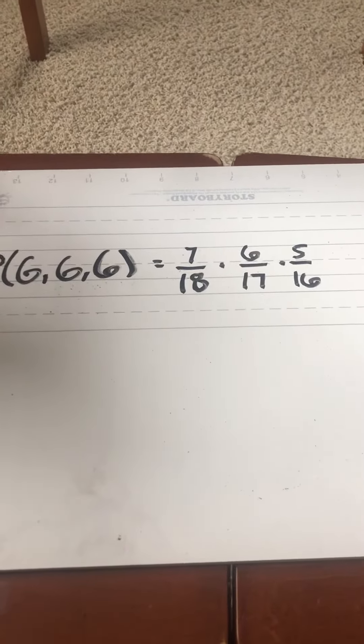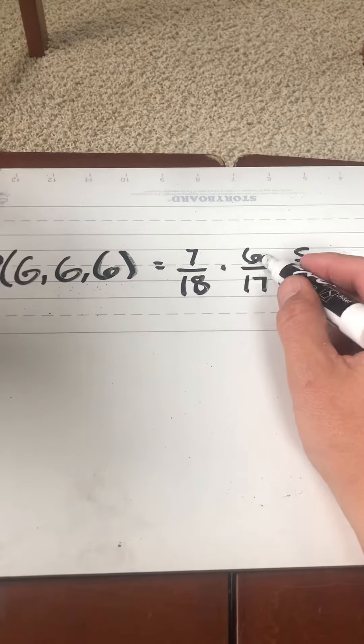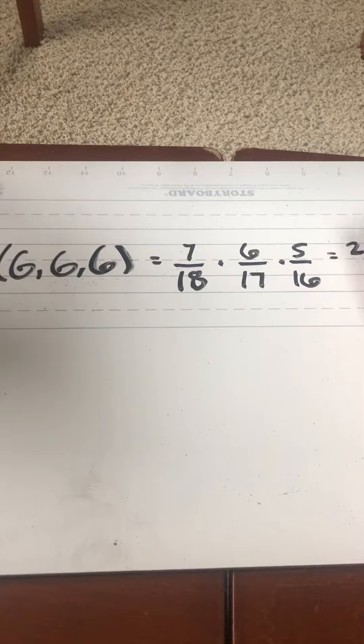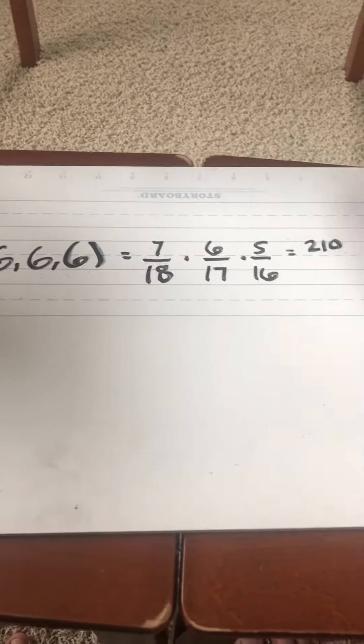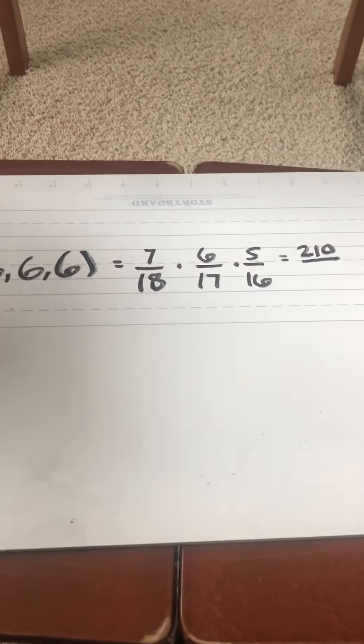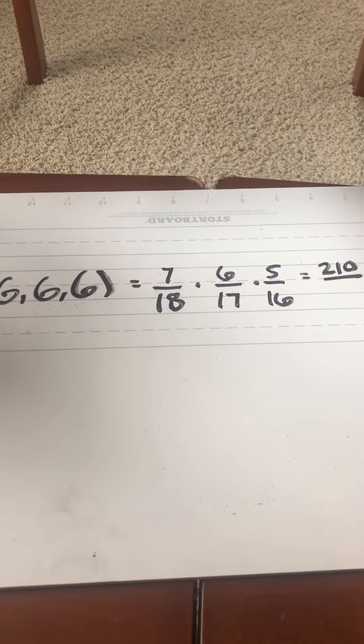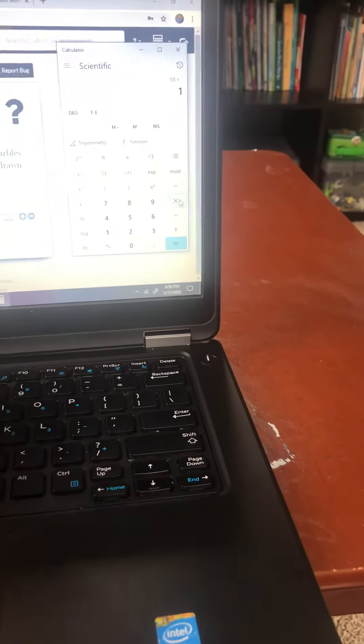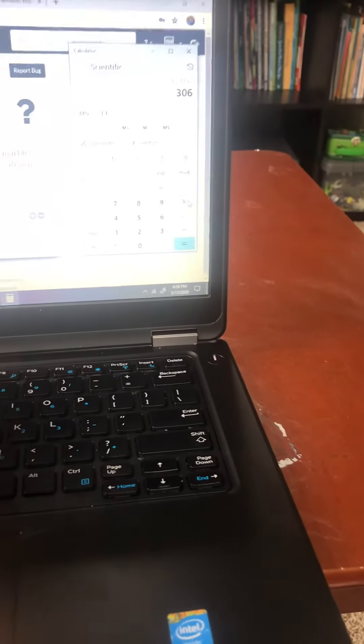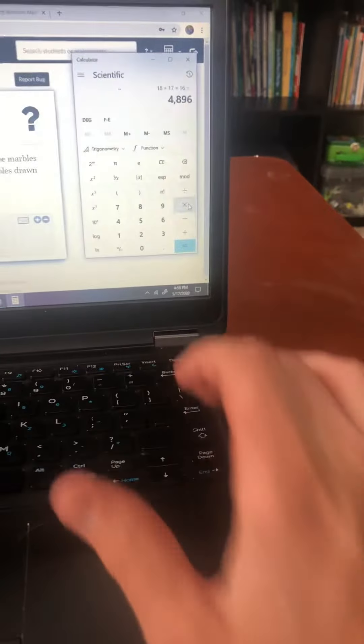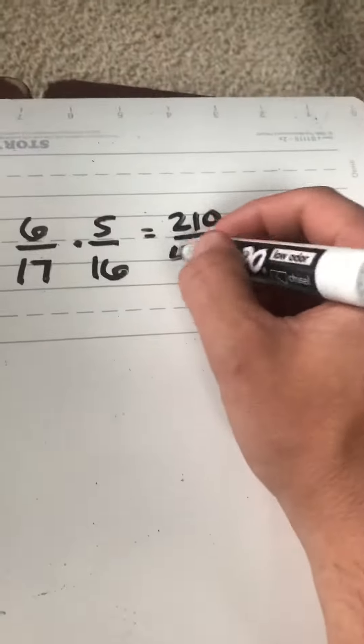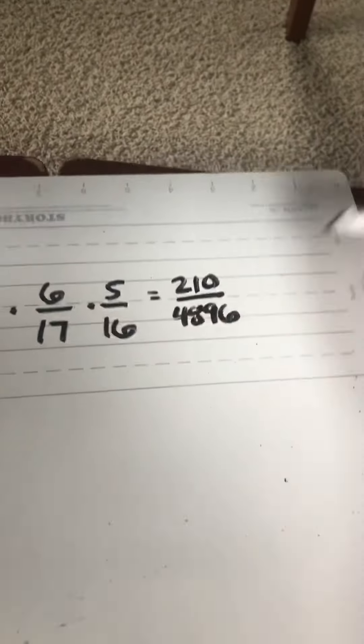So, we're going to multiply across the top. Five times six is 30 and 30 times seven is 210. I'll need a little assistance for the bottom, 18 times 17 times 16. So, I'll hop on my computer and I'll do 18 times 17 times 16. Enter and it's 4,896.